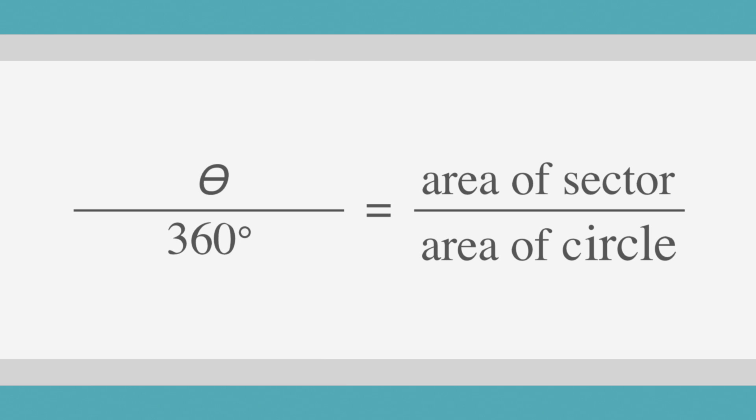To find the area of a circle, we use the formula theta of the sector divided by 360 equals the area of the sector divided by the area of the circle.